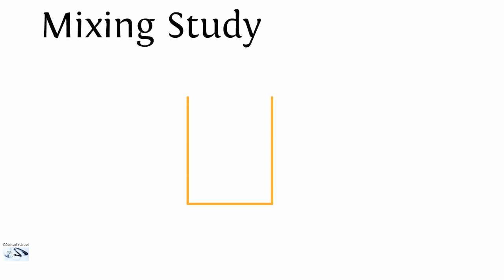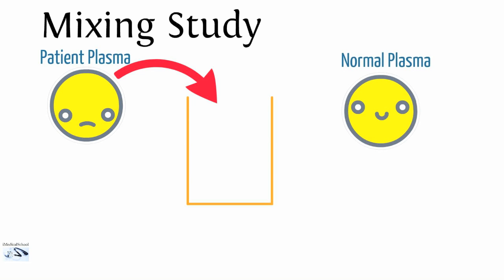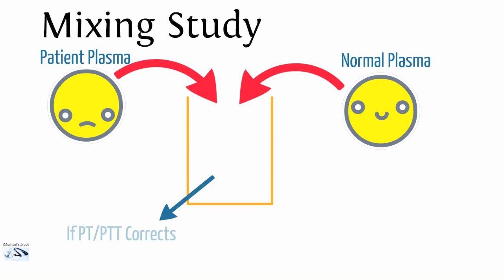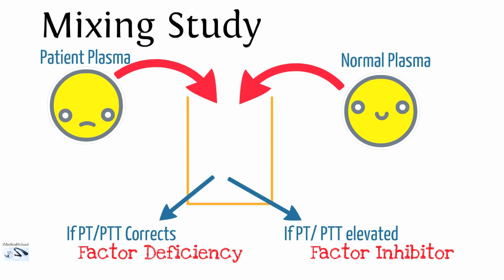Now let's talk about mixing studies. Once you've done all your coags and you think there could be a factor deficiency or inhibitor, a mixing study is the next step. In a mixing study, you mix your patient's plasma with normal plasma. If the PT and PTT correct, you know it's a factor deficiency, because the normal plasma supplied the missing factor. If the PT and PTT remain elevated, you have a factor inhibitor — the inhibitor in the patient's plasma is still inhibiting the factors in the normal plasma. This differentiates a factor deficiency from a factor inhibitor.